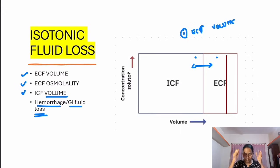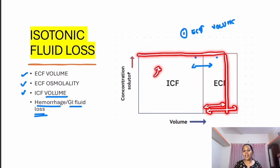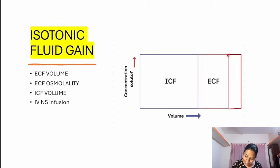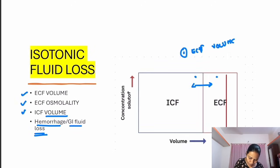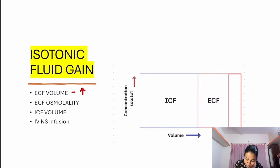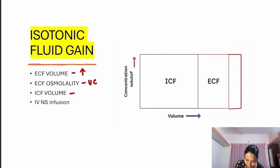In isotonic fluid loss — such as blood loss or GI fluid loss — tonicity is normal but fluid is removed from the extracellular compartment, so ECF volume reduces. Since tonicity doesn't change, there is no change in ICF — ICF only changes when tonicity changes between ECF and ICF. In isotonic fluid gain, ECF gains extra fluid but tonicity is normal, so ECF volume increases, ECF osmolality is unchanged, and ICF volume is unchanged. This is seen with IV normal saline infusion.